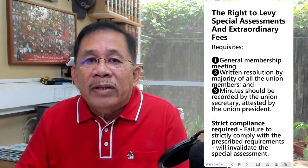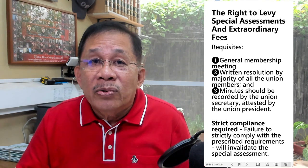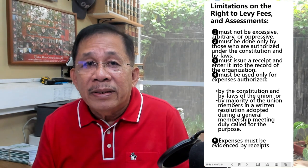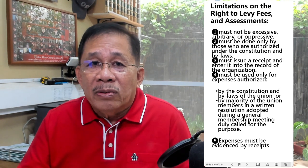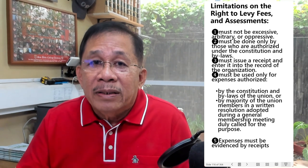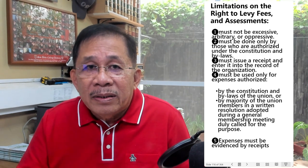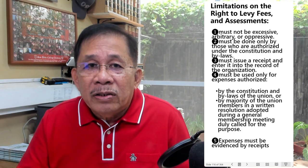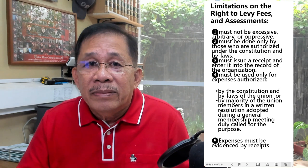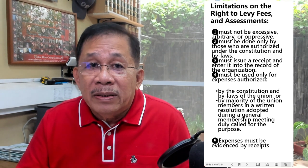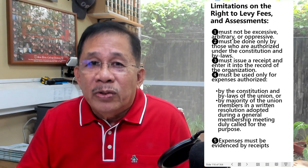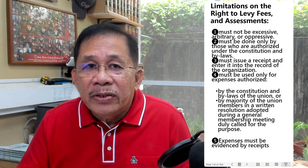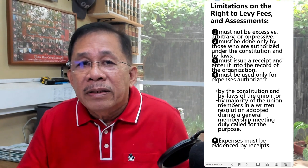A special assessment based on a resolution of the board of directors is null and void because the law requires resolution by a majority of all union members. The right to levy fees and assessments is subject to limitations: fees, fines, or forfeitures must not be excessive, arbitrary, or oppressive; collection must be done only by those authorized by the constitution and bylaws; the officer making the collection must issue a receipt and record it; funds must be used only for expenses authorized by the constitution and bylaws or by a majority of union members in a written resolution adopted during a general membership meeting; and expenses must be evidenced by receipts indicating the place, date, and purpose of payment.